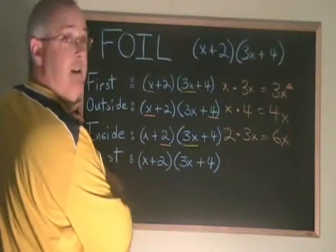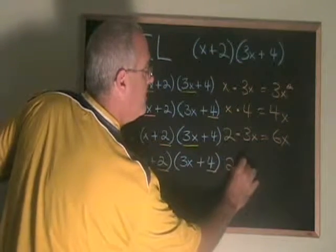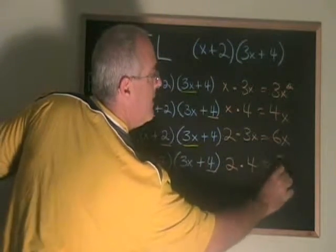Finally the last terms are the 2 and the 4. 2 times 4 equals 8.